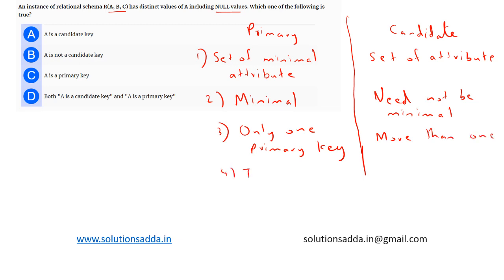A primary key cannot have null values, because using null we cannot uniquely identify a particular row or tuple. A candidate key, however, can have null. This is the basic difference between a primary key and a candidate key.